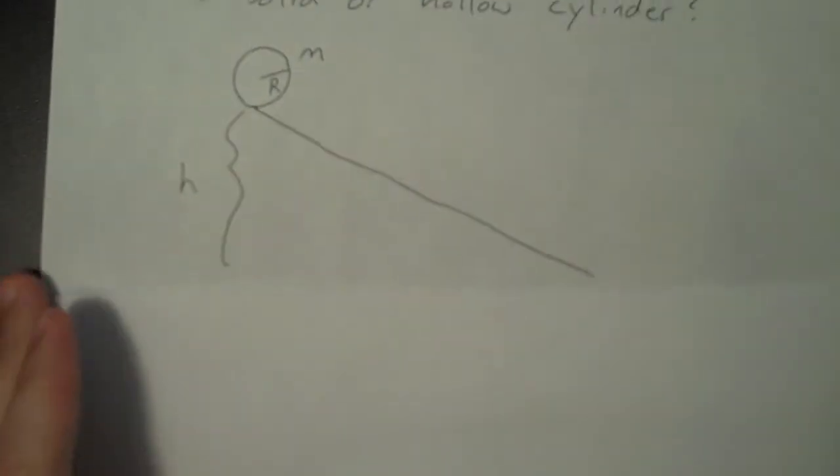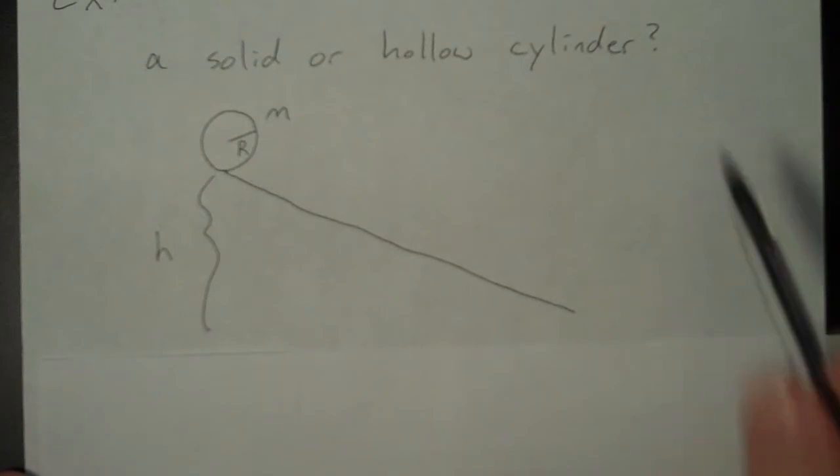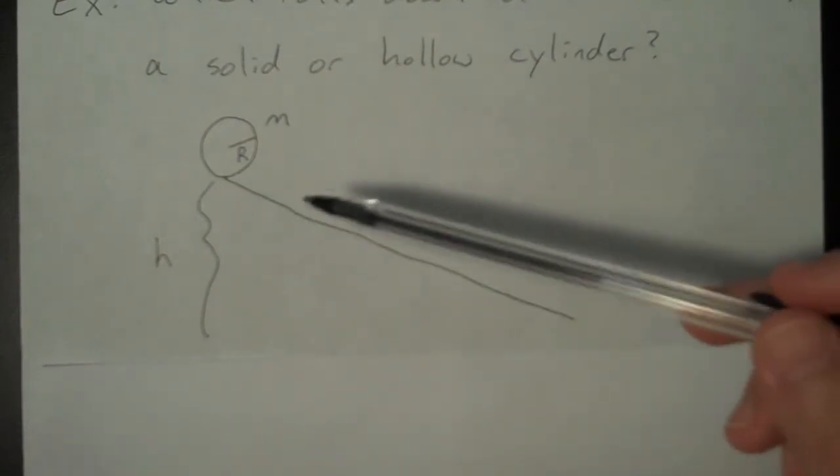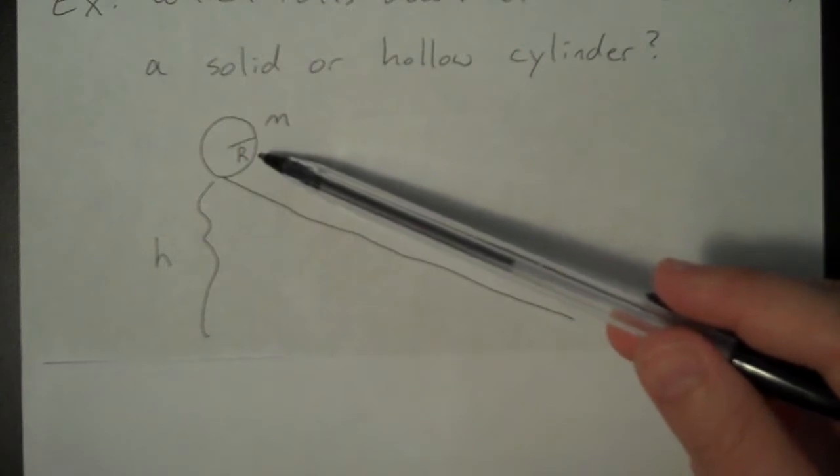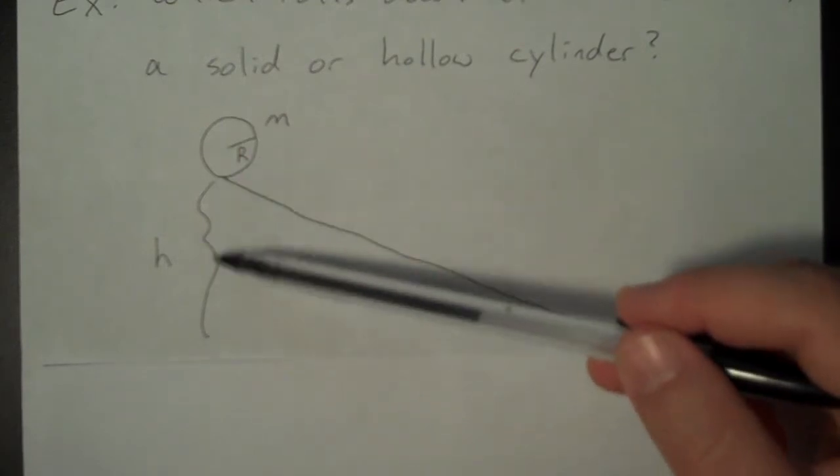Okay, let's get to our example problem. What we are going to consider is the following scenario. Let me make sure we're in frame. Okay, so we've got an incline plane. At the top of the incline plane, we have a cylinder. And the total height of our incline plane is h. The mass of the cylinder is m, the radius is capital R.